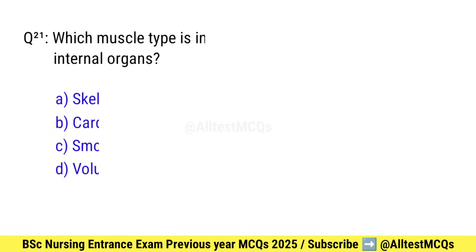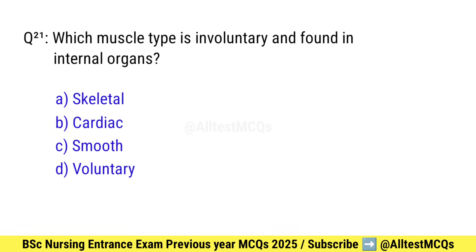Question number 21. Which muscle type is involuntary and found in internal organs? Right option is C: Smooth.